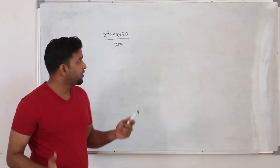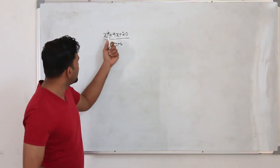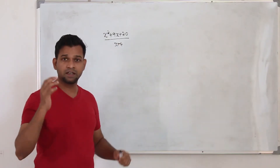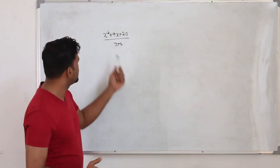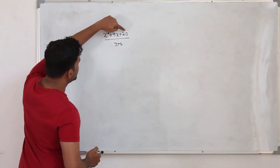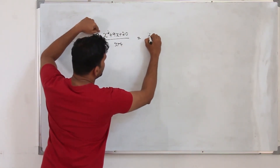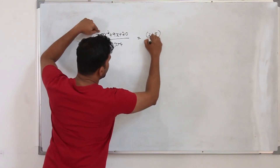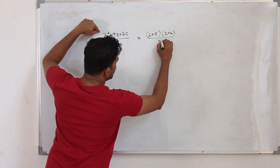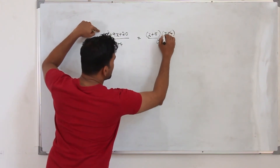1.1 algebraic fractions is so simple I am not going to explain much about this. You will be given algebraic fractions; you need to factorize the numerator and denominator and cancel out the common factors. For example, this question — you have a quadratic expression here. When you factorize this you can write it as (x+5)(x+4), and you have x+4 in the denominator so you can cancel the common factor.